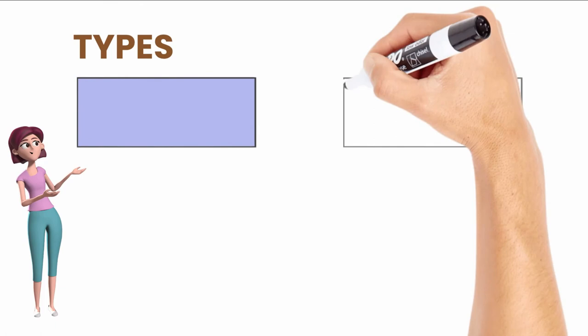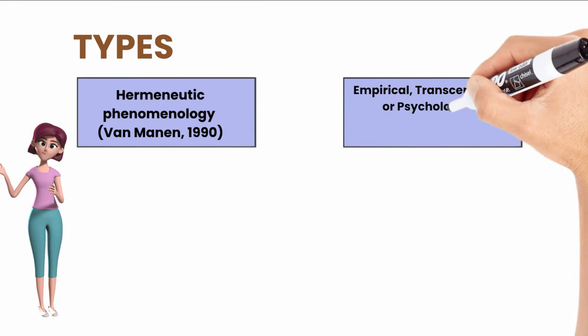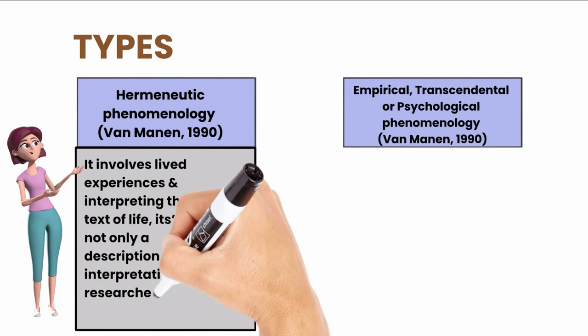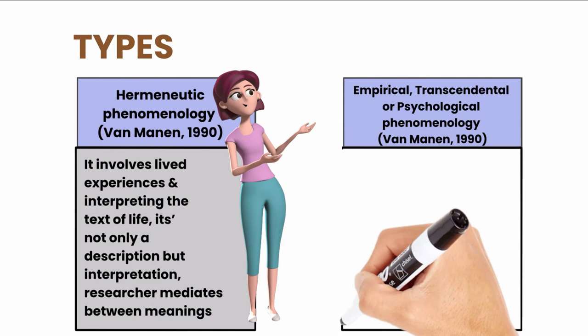There are two types of phenomenology: Hermeneutic phenomenology and empirical transcendental or psychological phenomenology. Hermeneutic involves lived experiences and interpreting the text of life. It's not only a description but interpretation. Researcher mediates between meanings.